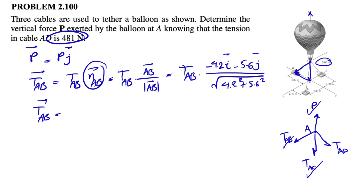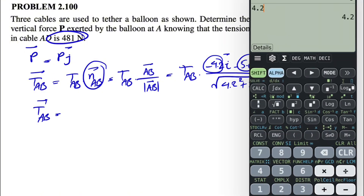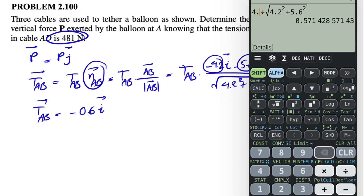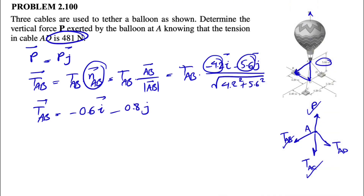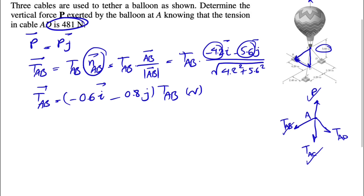Simplifying, we divide each component by the denominator. 4.2 divided by the square root of 4.2 squared plus 5.6 squared gives 0.6, with a negative sign so minus 0.6 i. For j, using 5.6 gives minus 0.8 j. So T_AB equals T_AB times (−0.6 i − 0.8 j) Newtons. That's T_AB expressed in vector form.